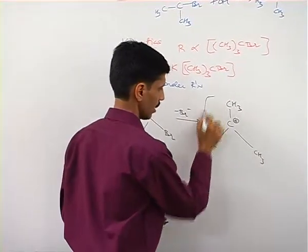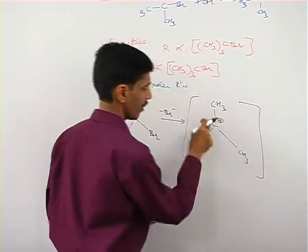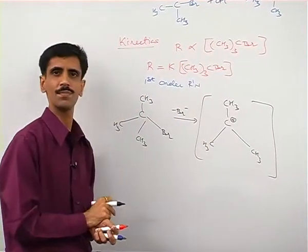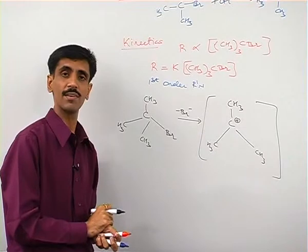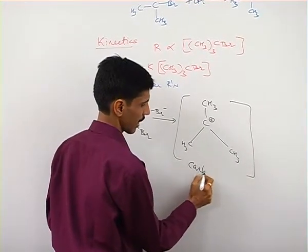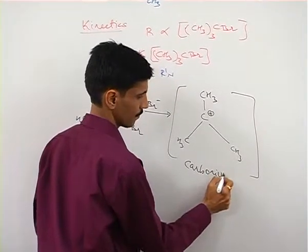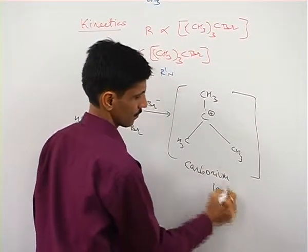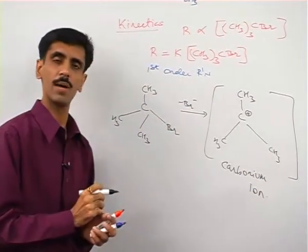So what happens, as you can see, we get a positively charged carbon over here. We get a positively charged carbon. And this positively charged carbon, we call it carbocation. We call it carbocation.